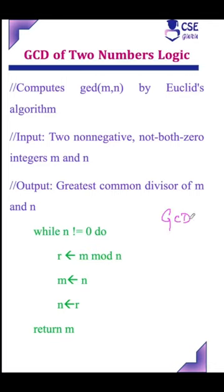Consider an example: GCD of 24 comma 12. Now this example we will implement with this logic. So while n value not equal to 0, it has to perform in a loop these three instructions until n value is 0.